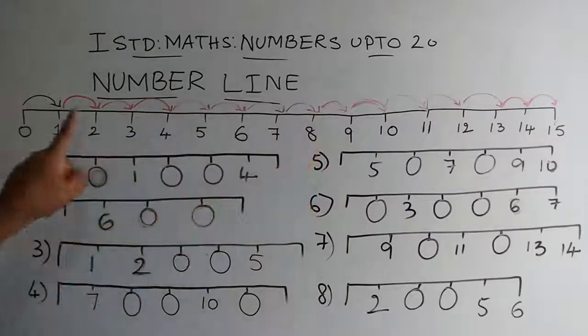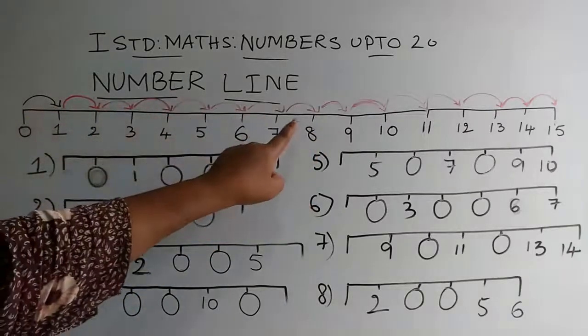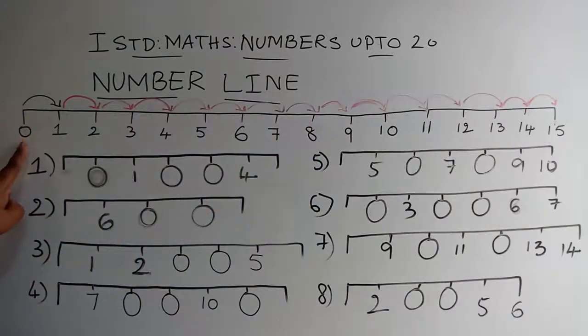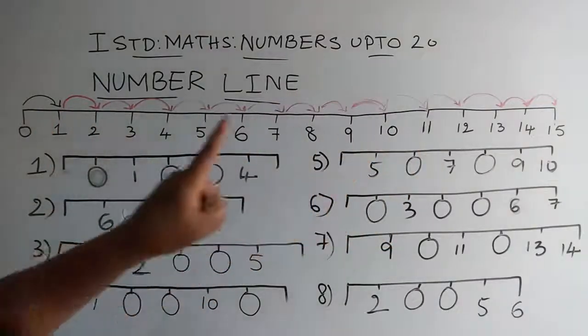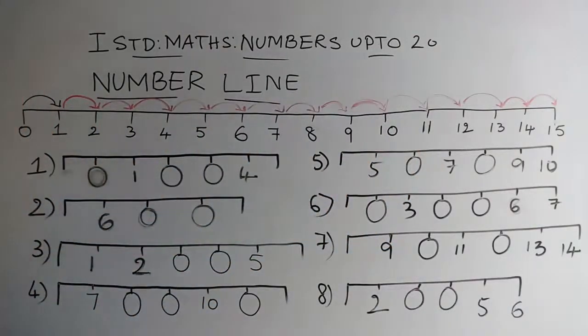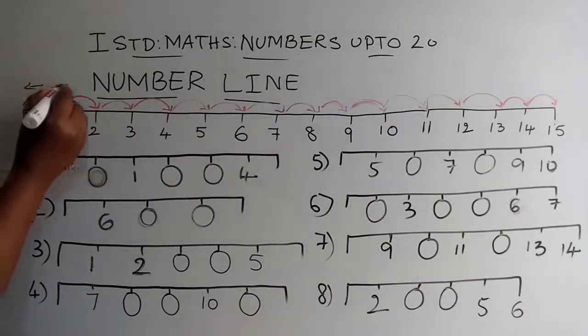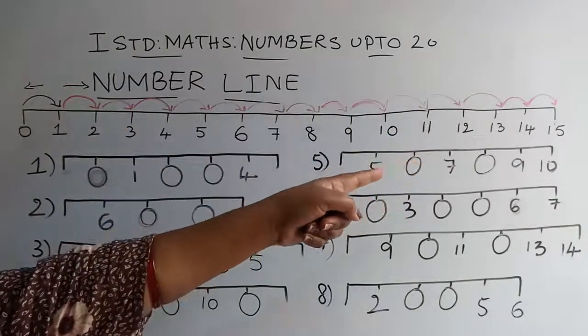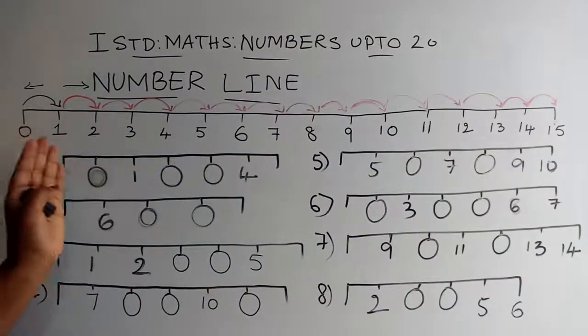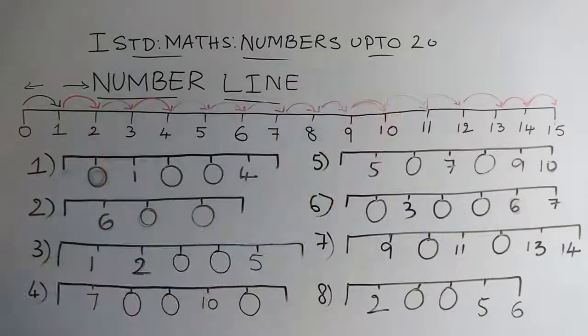Can you see here, children? This is the number line, and from 0 to 15, numbers are written. Listen, when we write numbers on a line from left to right, from this side to that side, these continuous numbers, we call it a number line.